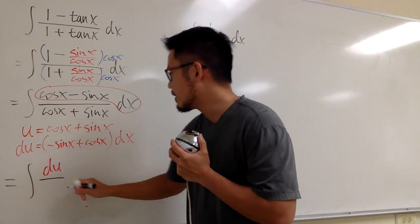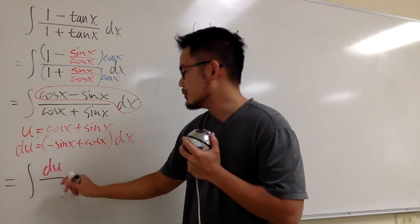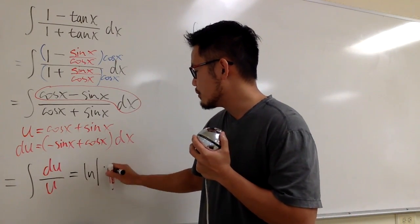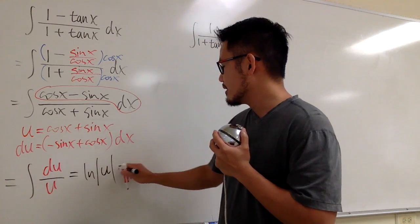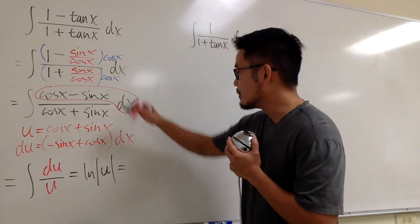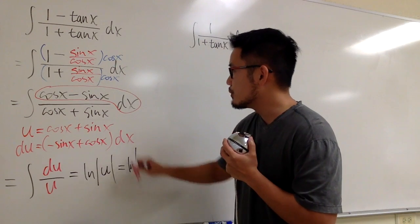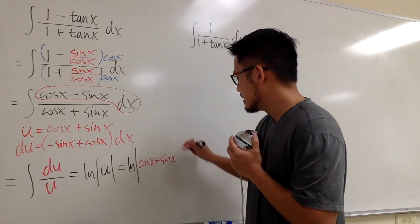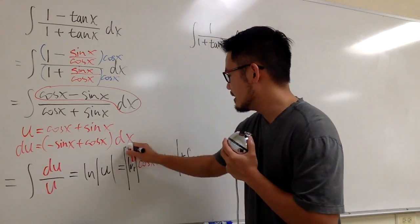The du on the top, over cos x plus sin x, that's just u. So we're just integrating 1 over u, right? And when we do that, we get ln absolute value of u. And we are done. But what's u? So the answer to this integral is just ln absolute value, cos x plus sin x. And we are so done, so we put plus c at the end. This is it.